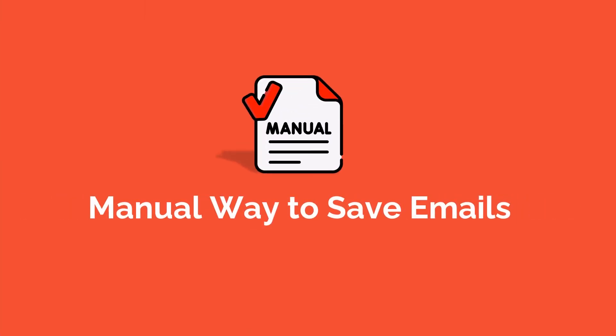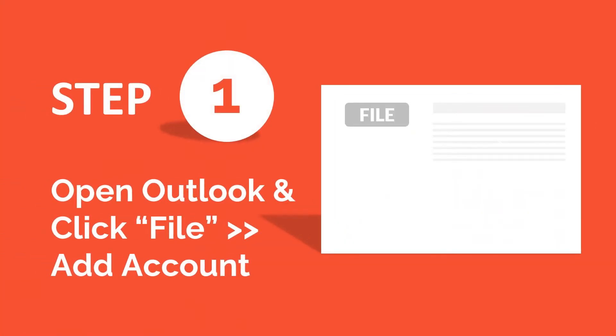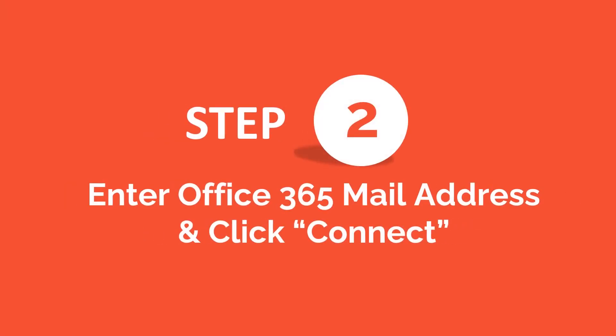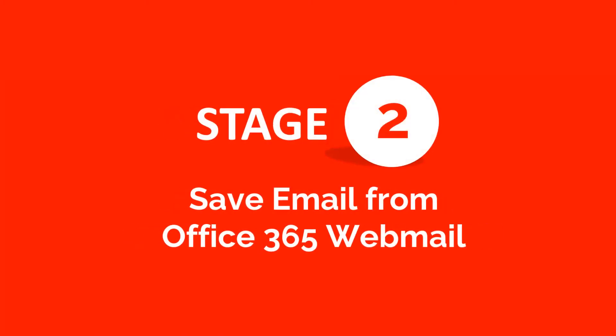Stage one is to configure your Office 365 email account with Microsoft Outlook. In step one, open Outlook and click File, then Add Account. Enter your Office 365 mail address and click Connect.